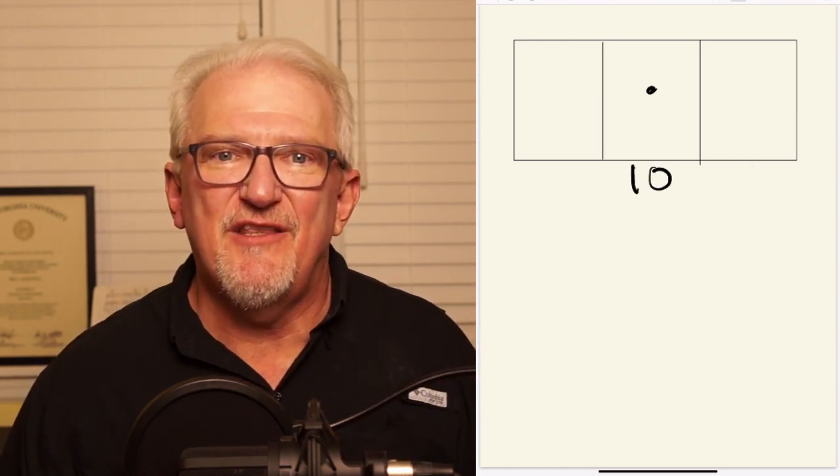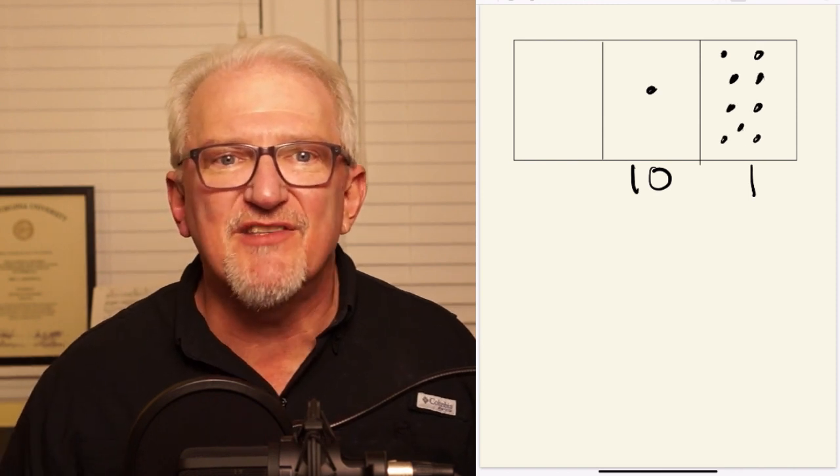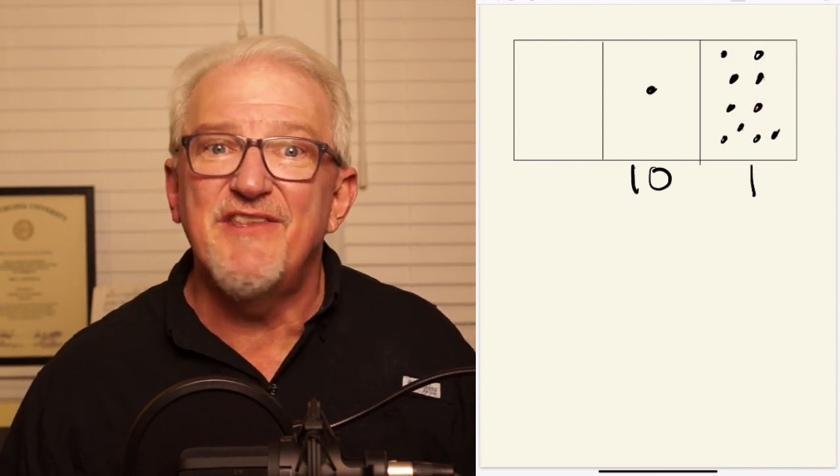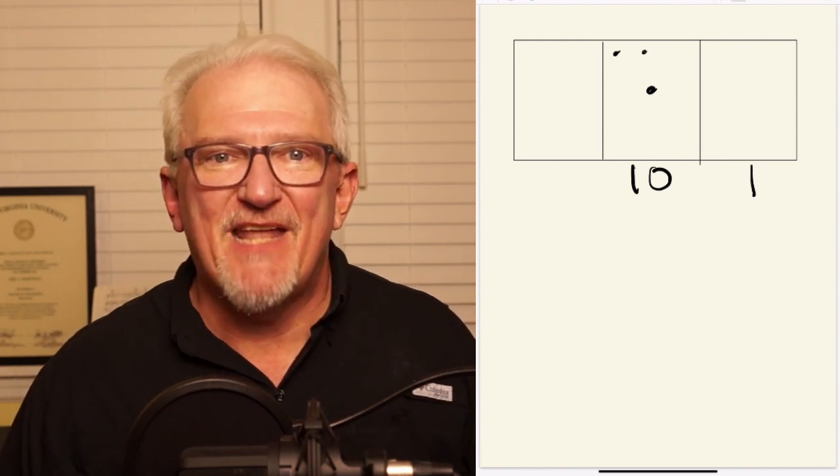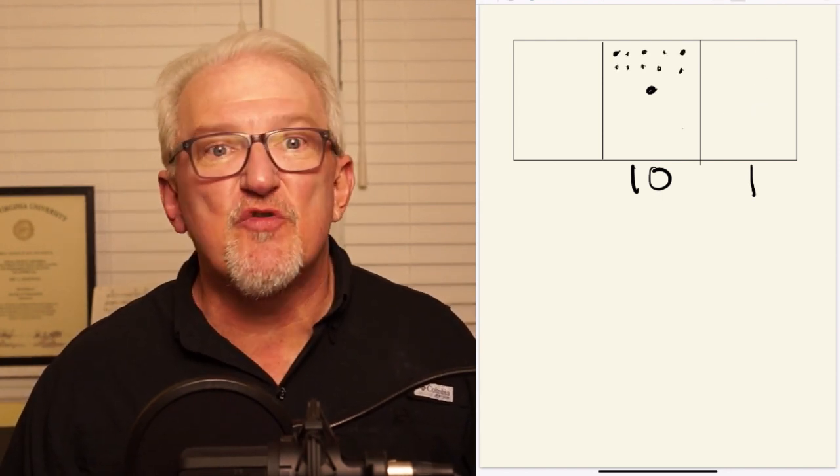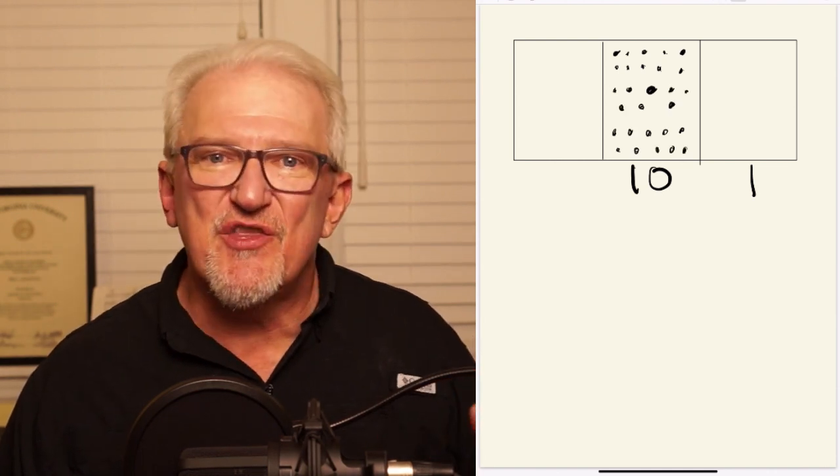In other words, one dot in the middle box represents 10 dots in the rightmost box. Then we will continue to draw dots in the rightmost box until another explosion occurs. As we can see, this procedure will produce 28 explosions and will leave 7 dots in the rightmost box.